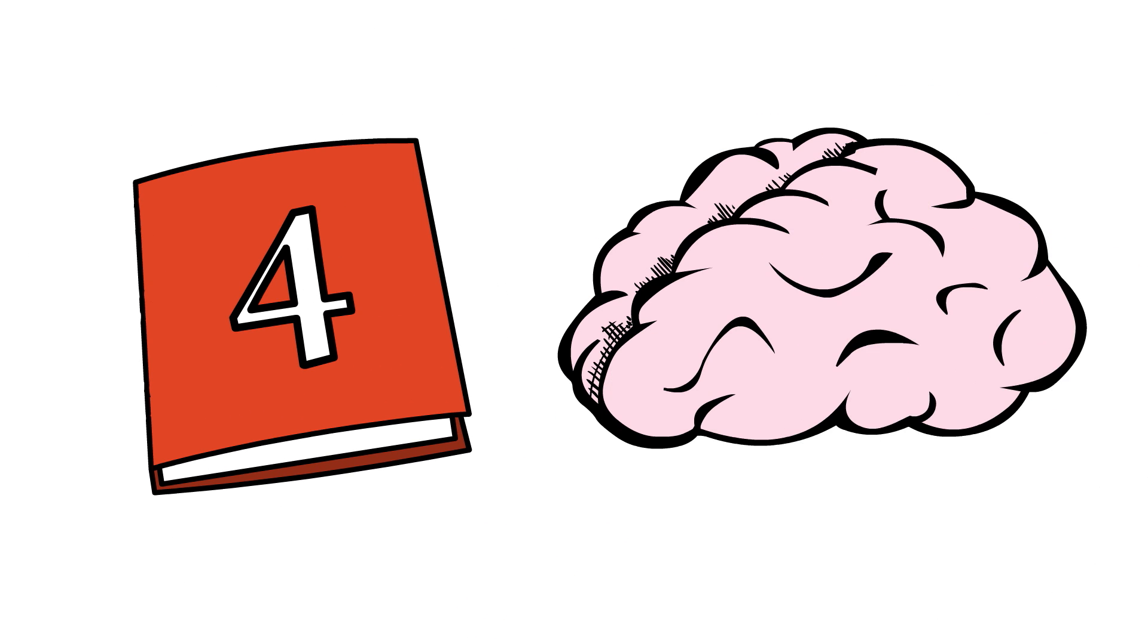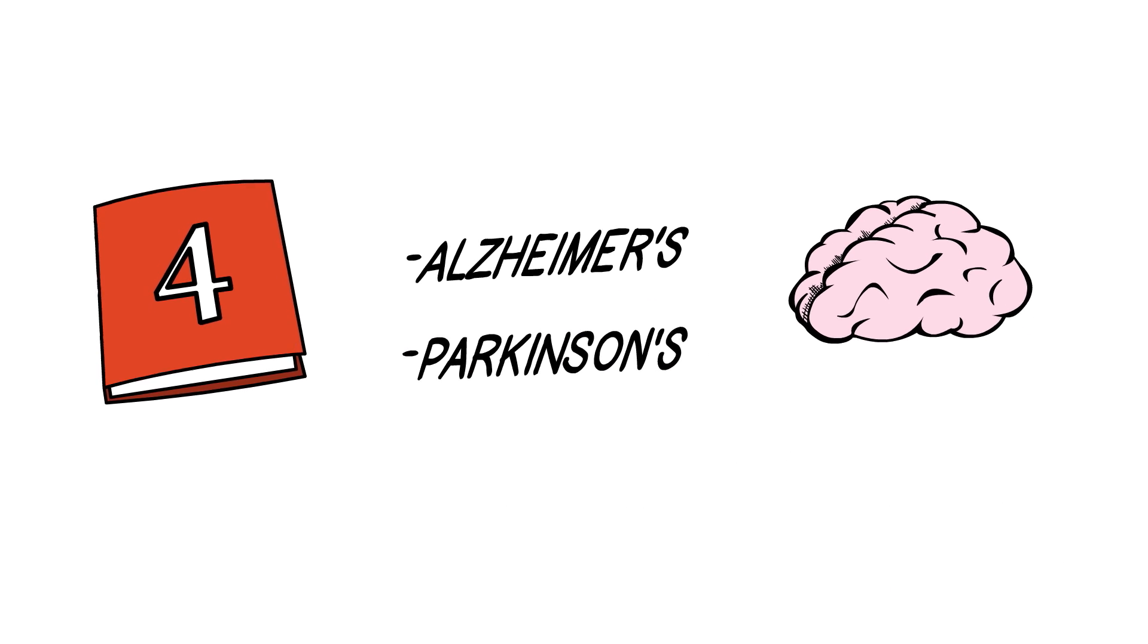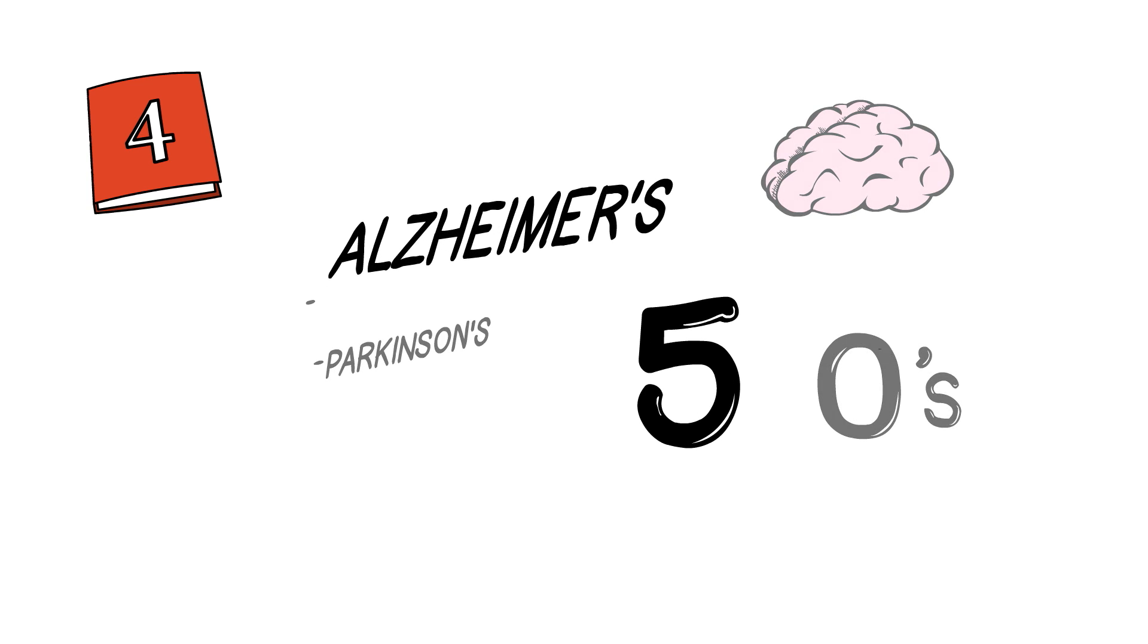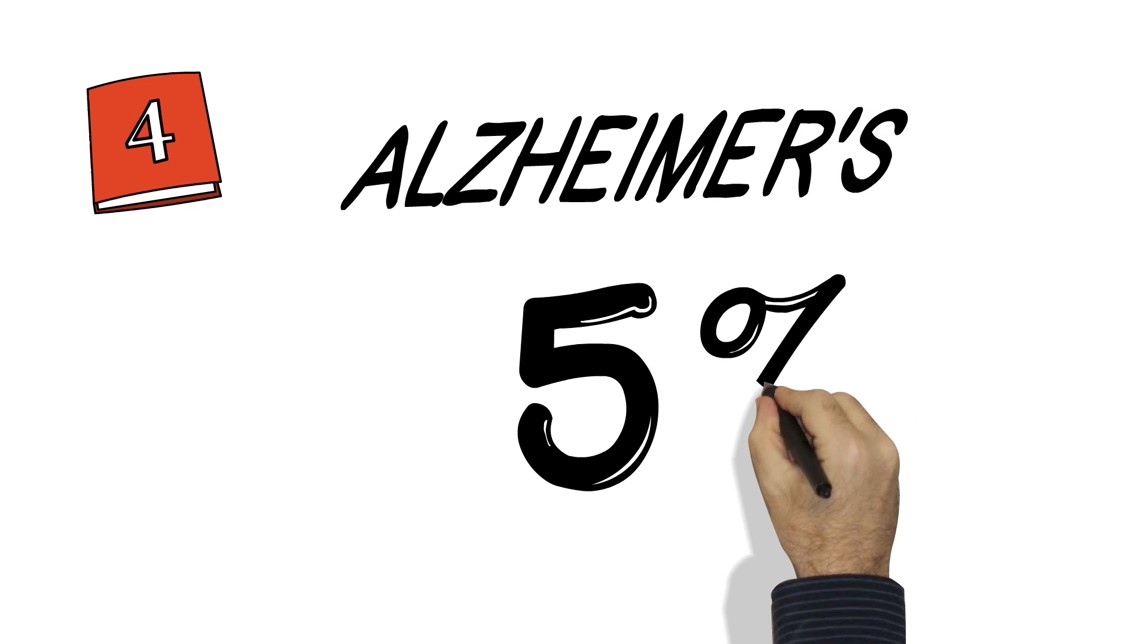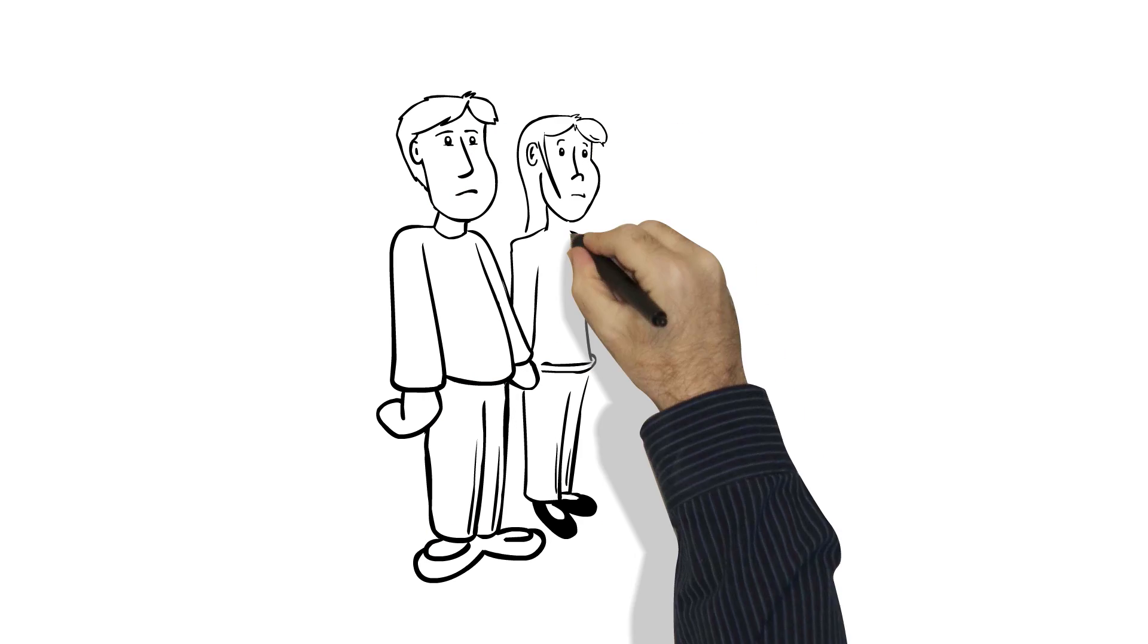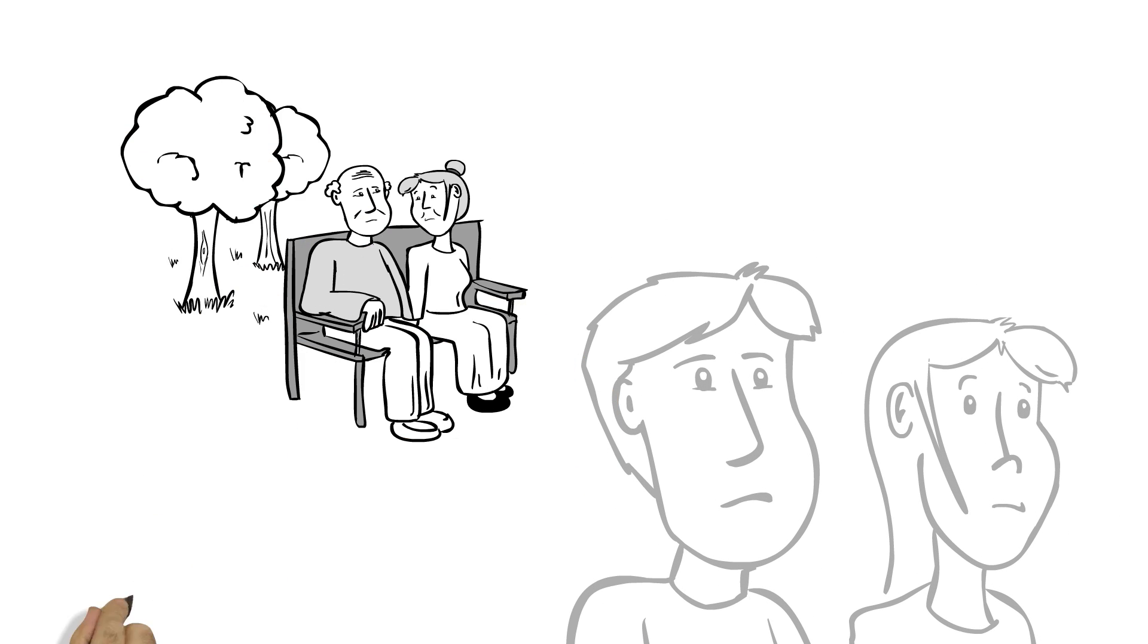Category 4 would reveal early onset brain diseases. So illnesses like Alzheimer's and Parkinson's have very rare genetic forms that strike people in their 30s, 40s, and 50s. For example, this is about 5% of Alzheimer's cases. Again, we don't currently have a preventive treatment for these early onset brain diseases, but this info could be helpful to make preparations.